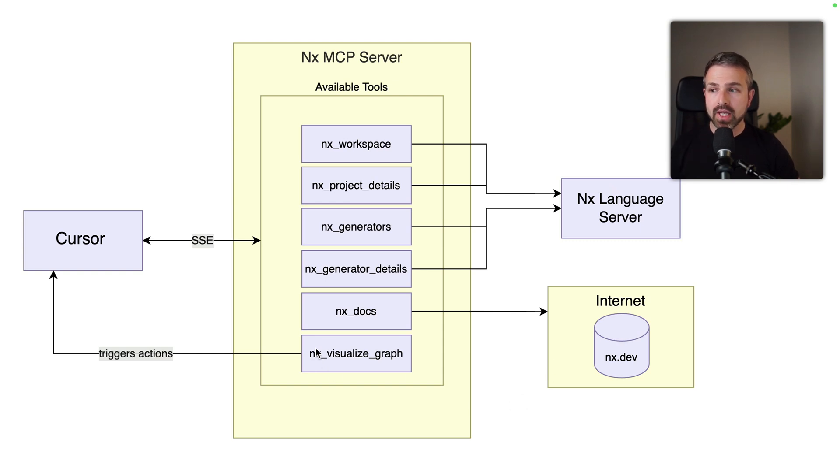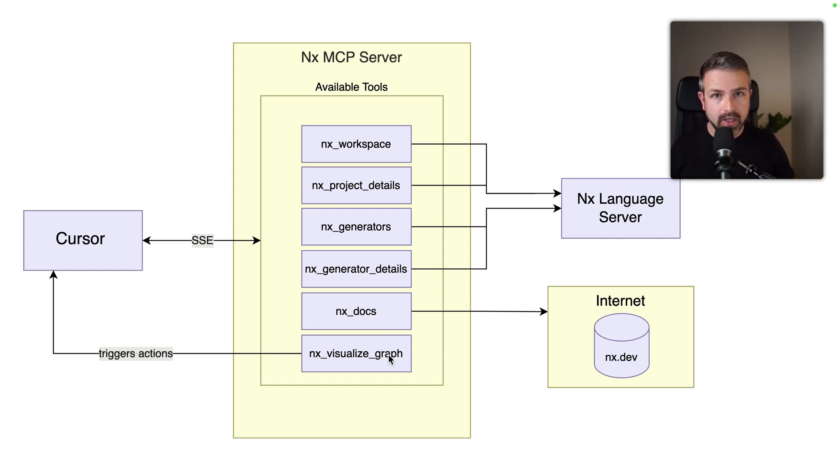One nice addition is also the NX visual graph, which does not just provide data but actually triggers action back into the editor. So this is very much version 1.0 — we are at the edge of development here. As we were implementing some of these features, the MCP protocol evolved to become more powerful, and the cursor team shipped updates that will be really useful for us to enhance the experience. So you will definitely hear from us both from the cursor side of things, but also from the GitHub Copilot side of things.